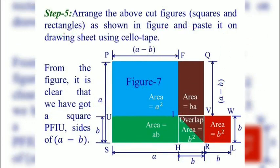Next step: Arrange the cut-out figures — the squares and rectangles — as shown in figure and paste them on the drawing sheet using cello tape. On square PQRS, two rectangles are pasted: one at the right side and one at the bottom. The overlapping area will be B square square units, and the remaining part is the blue color square having side A minus B units. From the figure it is clear that we have got square PFIU, the blue color square whose side is A minus B units, and the overlapping area has side B units and area B square square units.